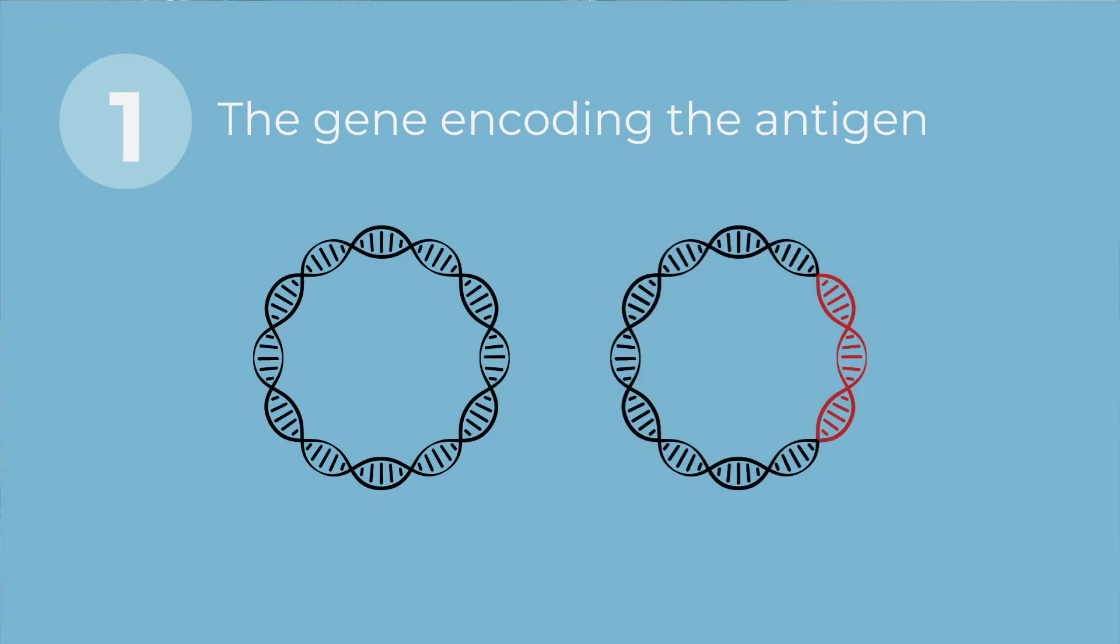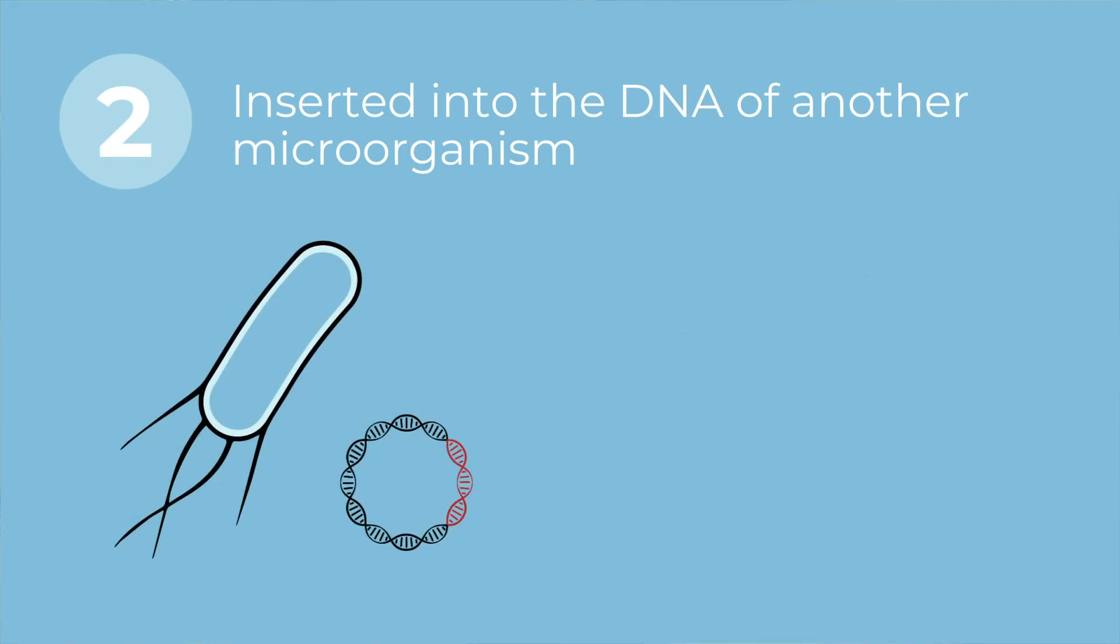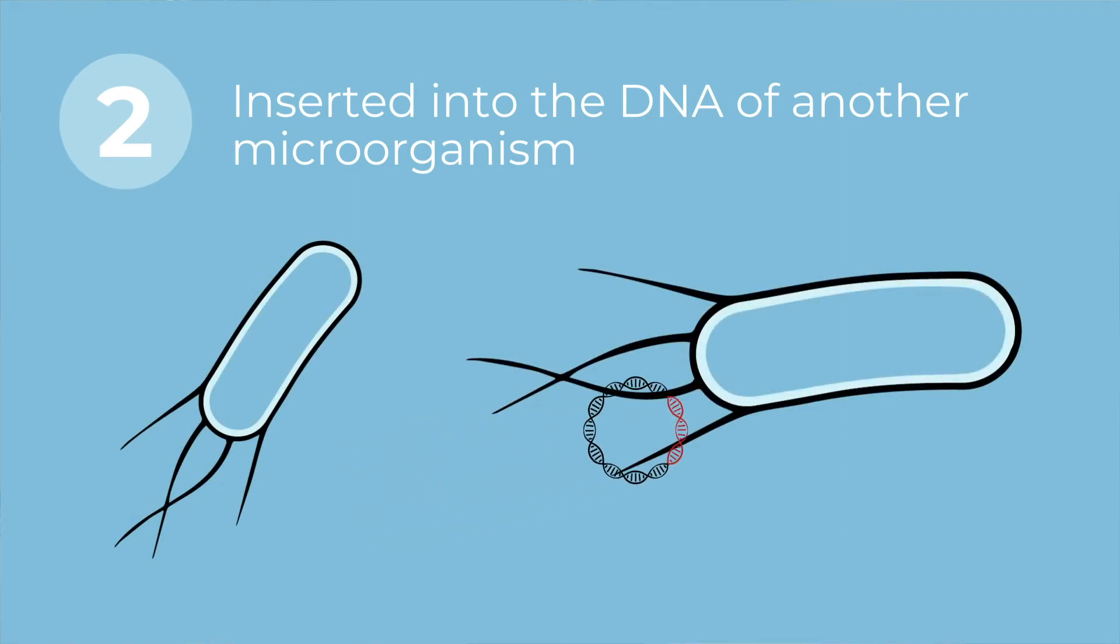The first step is that we need the gene encoding this small part of the antigen. When we have it, we have the second step, that is to insert this gene into the DNA of another organism.